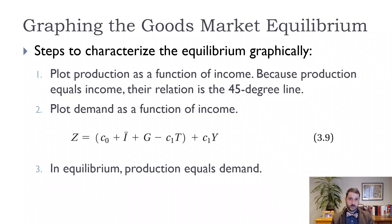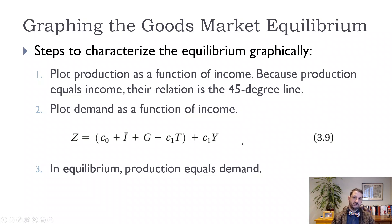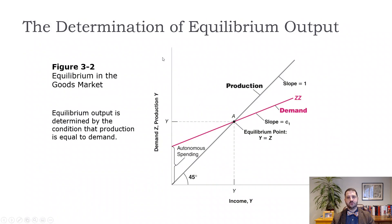Now we want to solve for it graphically — at least graph the solution. We're going to plot our demand function as a function of income. We have autonomous spending plus C1Y, meaning demand rises with income by a factor less than one. It looks similar to our consumption function but shifted up because we've added investment spending, government spending, etc.